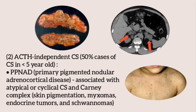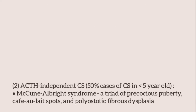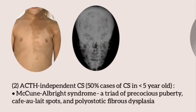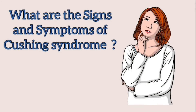Another cause of ACTH-independent Cushing syndrome is primary pigmented nodular adrenocortical disease (PPNAD), which is associated with atypical or cyclical Cushing syndrome or Carney complex — characterized by skin pigmentary abnormalities, myxomas, endocrine tumors, and schwannomas. Massive macronodular adrenal hyperplasia is associated with extremely large adrenals and multiple cortisol-producing adenomatous nodules. McCune-Albright syndrome is also a rare cause — it is a triad of precocious puberty, café-au-lait spots, and polyostotic fibrous dysplasia.